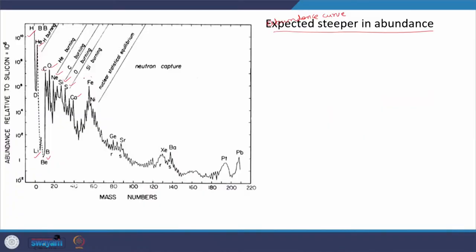There is an exception regarding the formation of iron elements — suddenly there is a rise in the abundance of iron elements around the iron peak. Overall, except for lithium, boron, beryllium, and this iron peak, the general trend is it goes steeper and steeper.